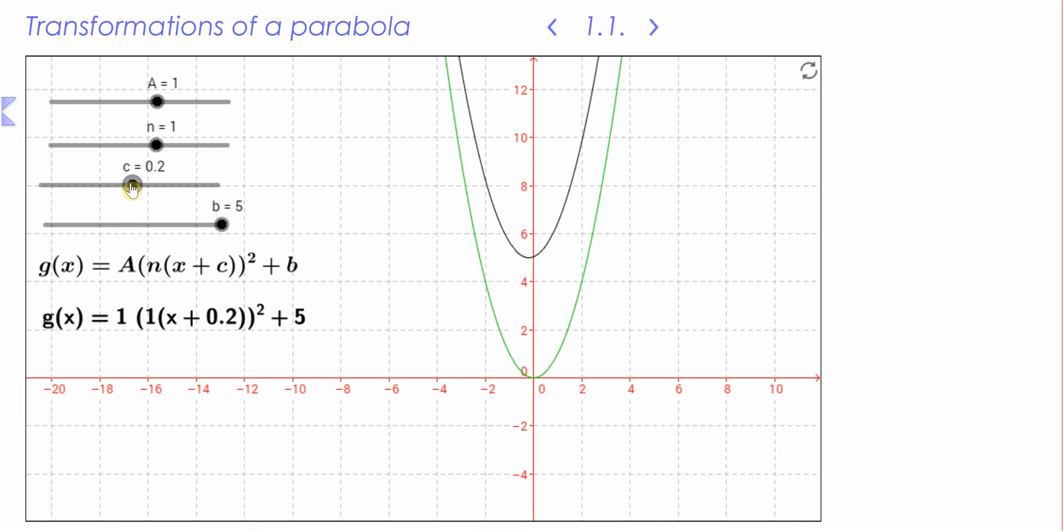Let me make c = 0 again. So you can see that. There you go. So when it's 4, you can see that it's just being moved up by 4.